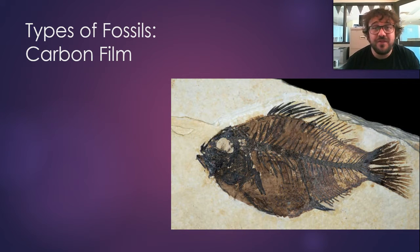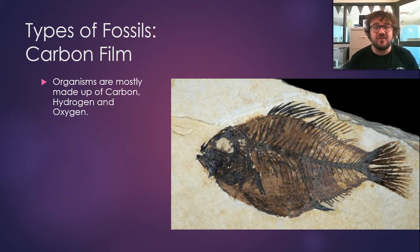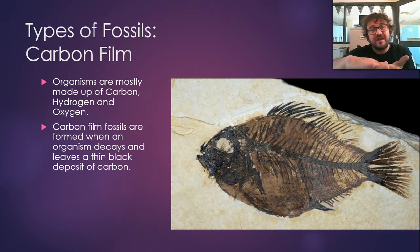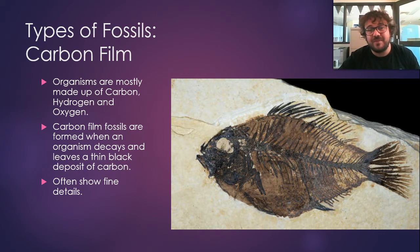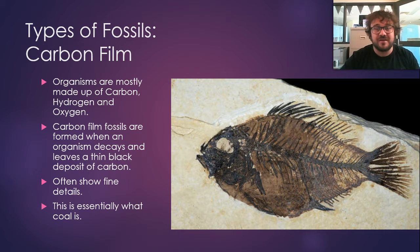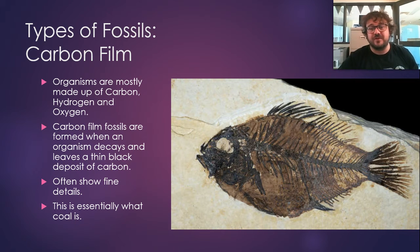Our third type is carbon film. Basically, everything is made of carbon, hydrogen, and oxygen, and when it dies, the only thing left over after everything else has decayed is a black layer of carbon that makes the fine details visible. It's really cool — just painted on that layer of rock because of where it died and rotted away. And basically, this is what coal is: coal is really thick carbon films.